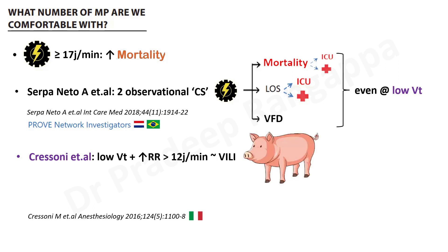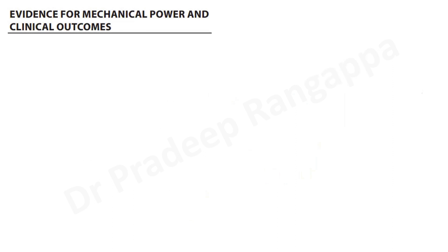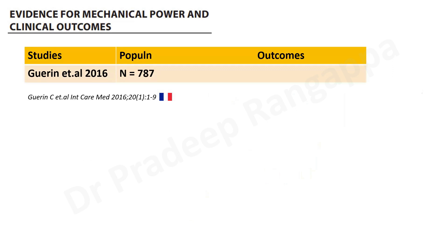Cressoni et al. from Italy showed that at low tidal volume but high respiratory rate, a mechanical power above 12 joules per minute in PIGS caused ventilator-induced lung injury. They showed that shortening inspiratory time requires increasing inspiratory flow, which raises airway pressure and therefore mechanical power. The key message: tweaking one variable has a bearing on others and increases mechanical power. This was shown in animal models as a precedent.